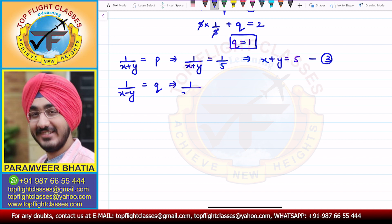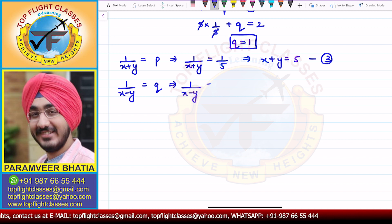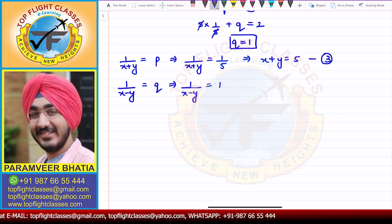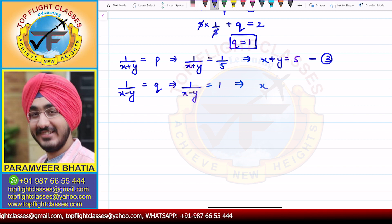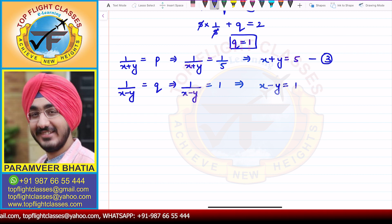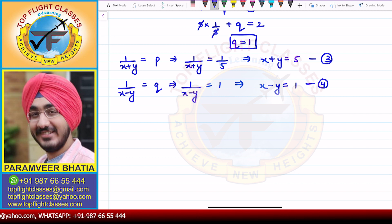Since we put 1/(x-y) = Q, and Q = 1, we get 1/(x-y) = 1, so x - y = 1. This is our fourth equation.